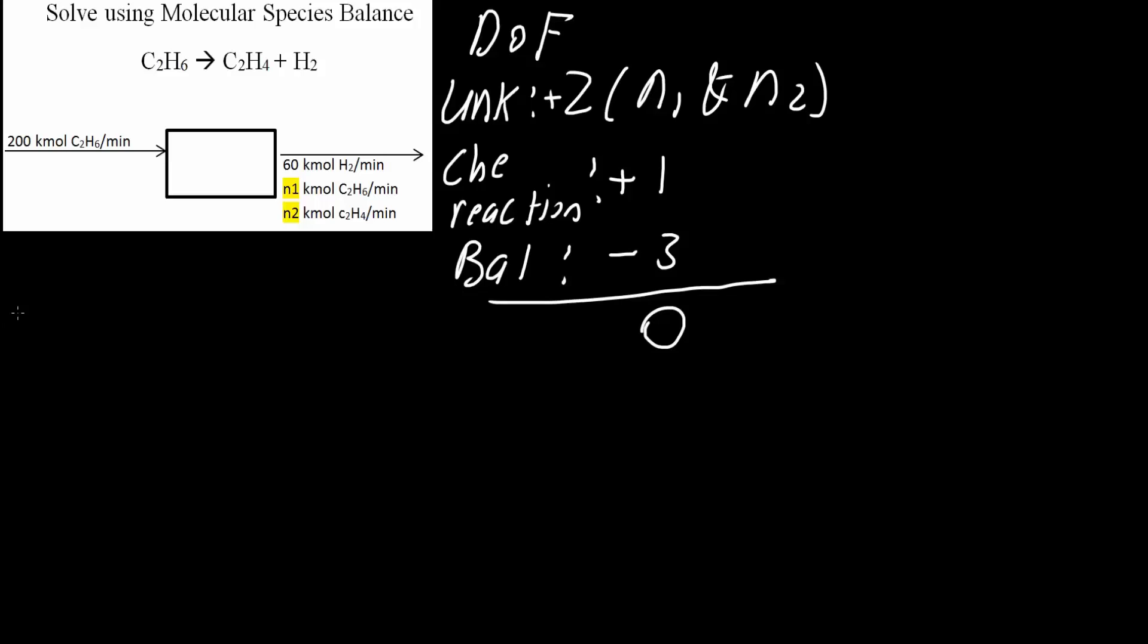So we can now do H2. We'll do an H2 balance. With H2, it's going to be generation equals output. We're given that H2 is 60. So we can write this down: 60 kilomoles of H2 per minute. Now this will help us solve the other two components.